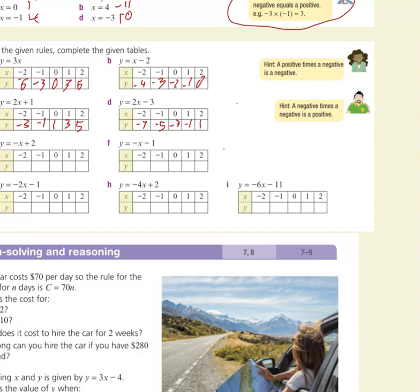For y equals negative x plus 2: minus minus 2 is positive 2, plus 2 is 4; minus minus 1 is positive 1, plus 2 is 3; and so forth: 2, 1, 0. For y equals negative x minus 1: minus minus 2 is positive 2, minus 1 is 1; minus minus 1 is positive 1, minus 1 is 0. Just following the same pattern, getting one smaller every time.